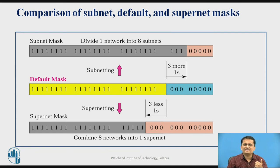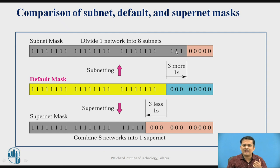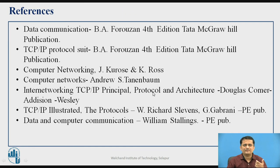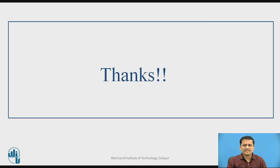Comparing the masks: if this is the default mask, when using subnetting the mask width increases because the subnetwork ID part is added to the network ID part. In the case of supernetting, the size of the mask reduces. You can easily understand this by looking at the comparison diagram. These are the references used for this presentation. Thank you.